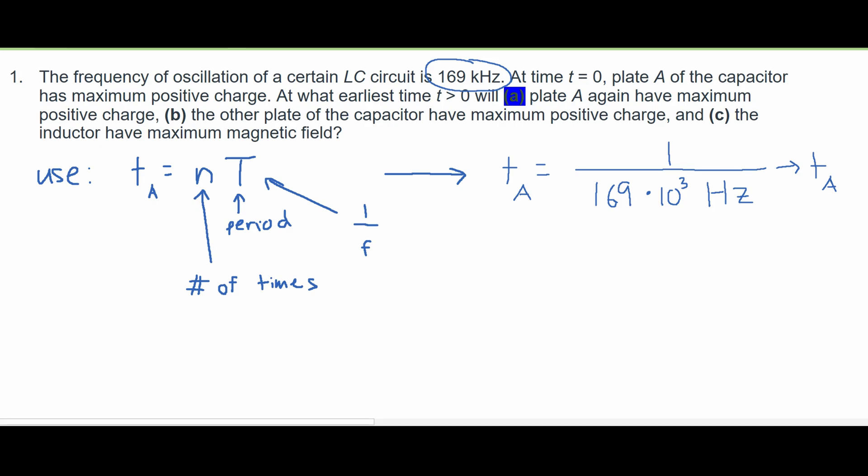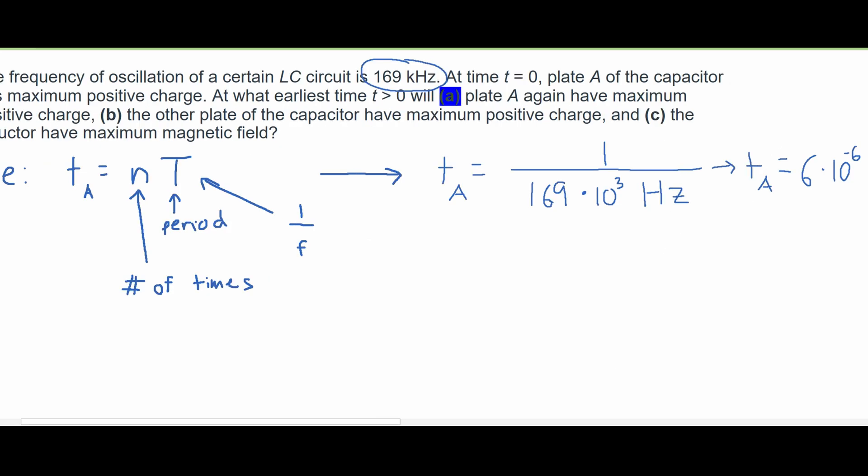After we do this, we are going to see our T of A is equal to approximately 6 times 10 to the negative 6. And our units is just going to be in seconds, because it's time. So this is the answer for part A.